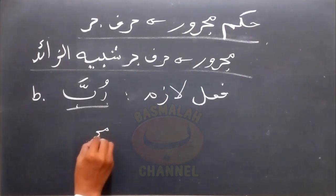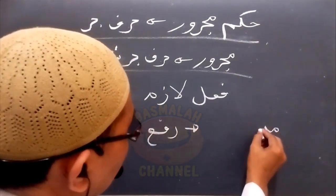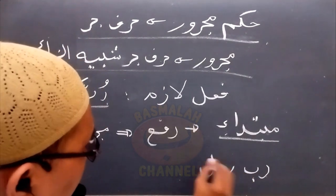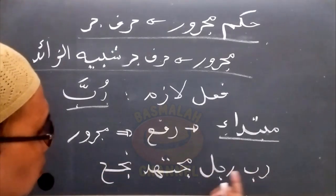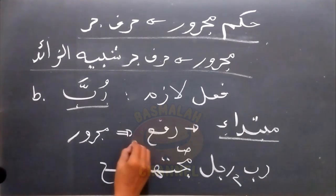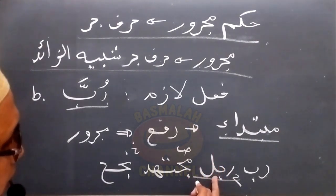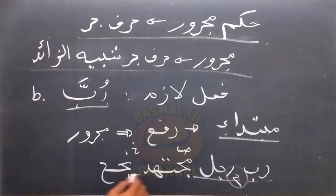Kemudian keadaan yang ketiga adalah manakala setelahnya Rubba ini berupa Fi'il Lazim, maka mahal daripada Majrurnya ini adalah rafa' sebagai Mubtada. Contohnya seperti lafad 'rubba rajulin mujtahidin najaha' — banyak sekali orang laki-laki yang bersungguh-sungguh telah berhasil. Kita perhatikan lafad 'rojulin' di sini; secara lafat dijerkan namun secara mahal dia itu rafa' sebagai Mubtada. Hal itu terjadi karena setelahnya Rubba itu berupa Fi'il Lazim, tidak berupa Fi'il Muta'addi sebagaimana dua keadaan sebelumnya.